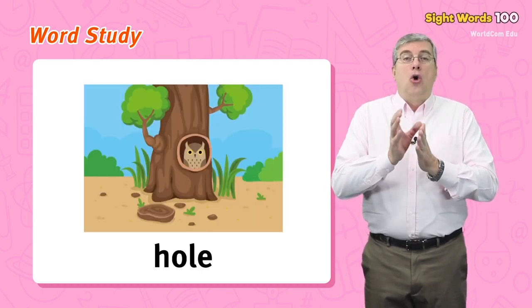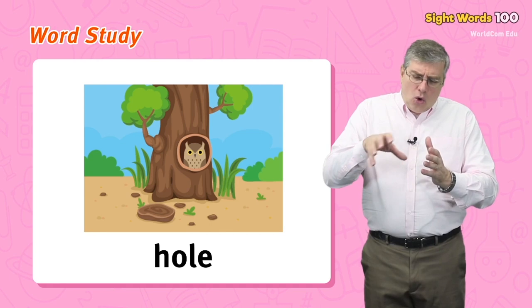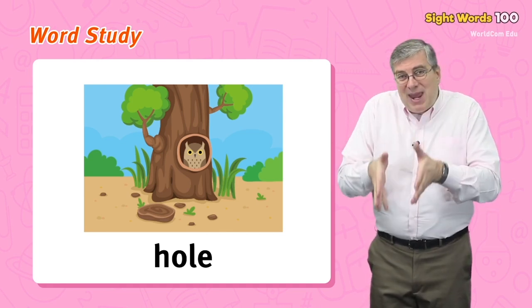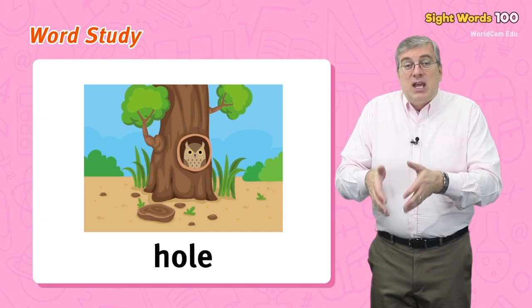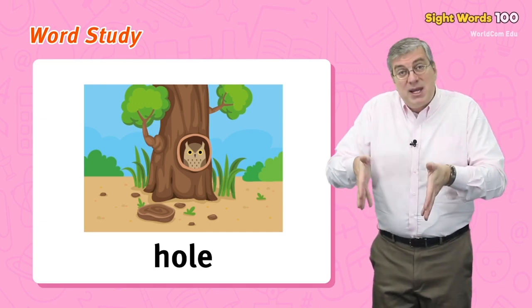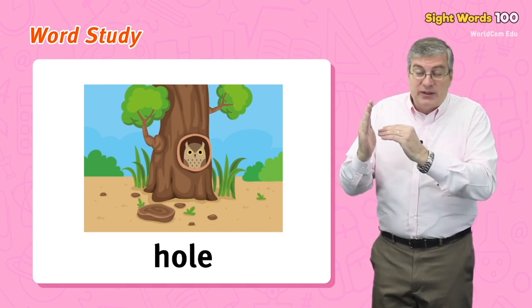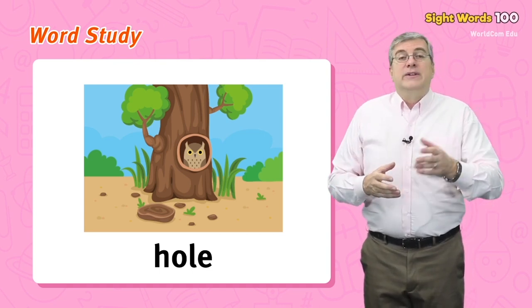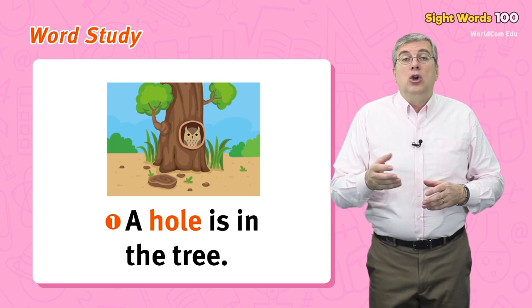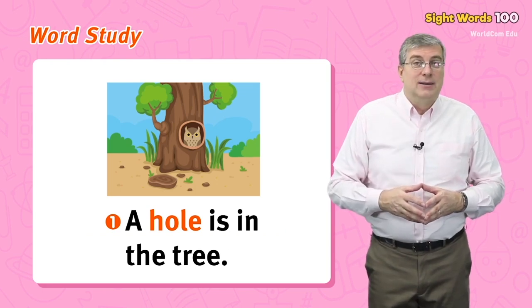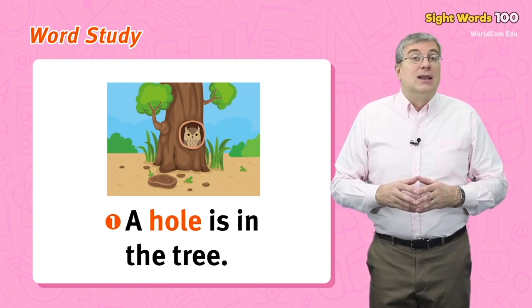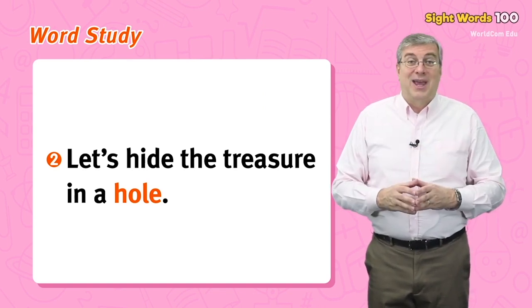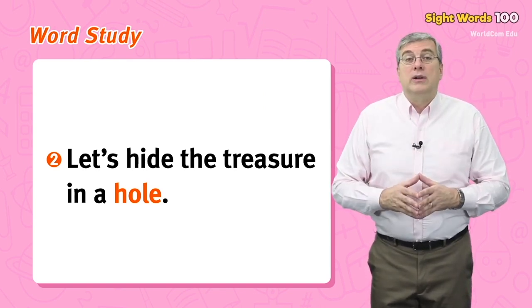Finally we have hole. A hole is an empty space that has been made in something. Holes can be in the ground, a piece of wood, or really anything. For example, a hole is in the tree, or let's hide the treasure in a hole. Those are our words for today.